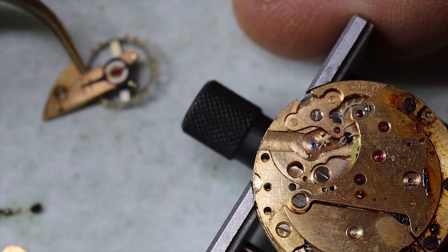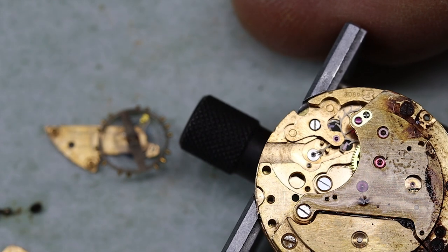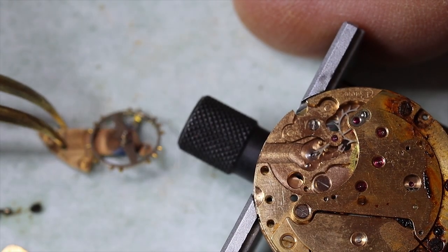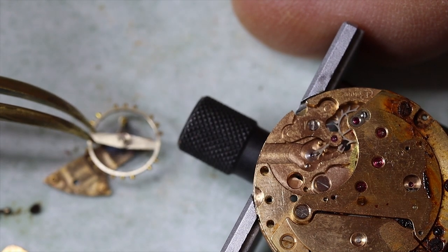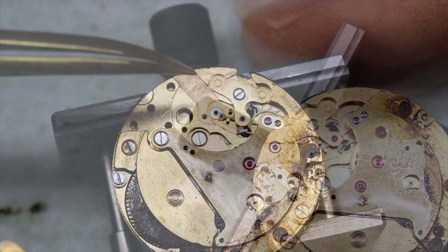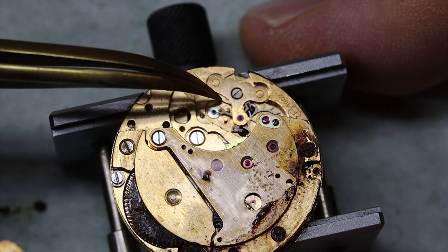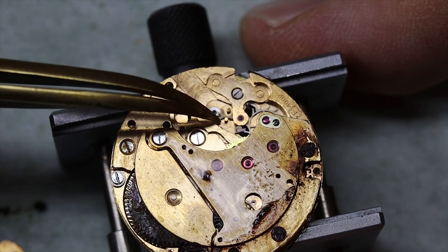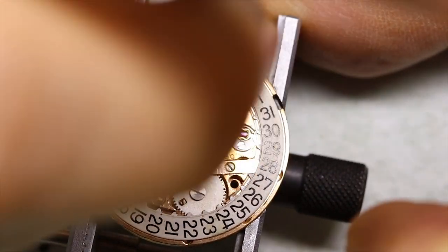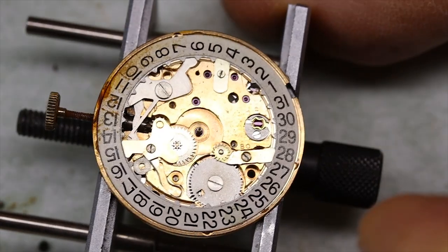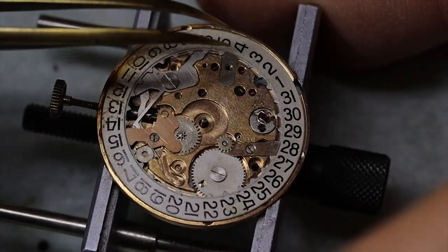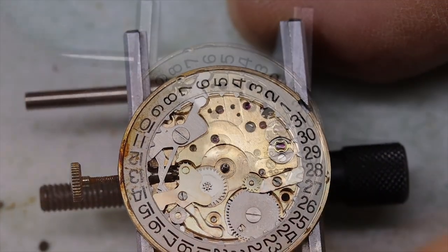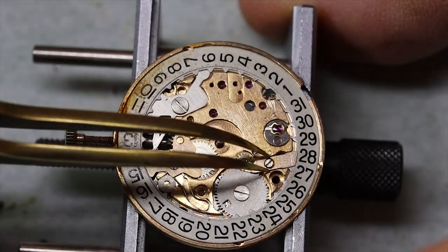Before we go any further, let's take the balance out, put it safely away. And what you'll see is that for all these parts we need to really inspect them to see if they are, let's say, intact. We can see that the pallet fork also works. There is some power on the movement apparently because it does flip from side to side.